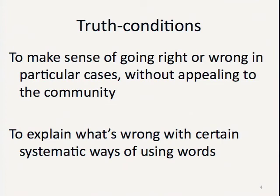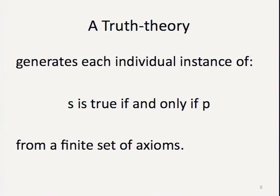We have to be able to make sense of what it is to be going right or wrong when you're using the sign. We don't want to say it's just agreeing with everyone else that makes your use of a sentence true or false. We also want to be able to say some ways of using signs are systematically wrong — tonk is like that. The kind of truth theory we were looking at last time states what has to be the case for sentences of a language to be true or false. A truth theory takes all the individual signs, the basic vocabulary of the language, and gives you an axiom for each — it states what that sign refers to, or what it takes for that sign to apply to an object. And then you get all these S-P pairings: S is true if and only if P, for every sentence of your language, derived from that basic set of axioms.